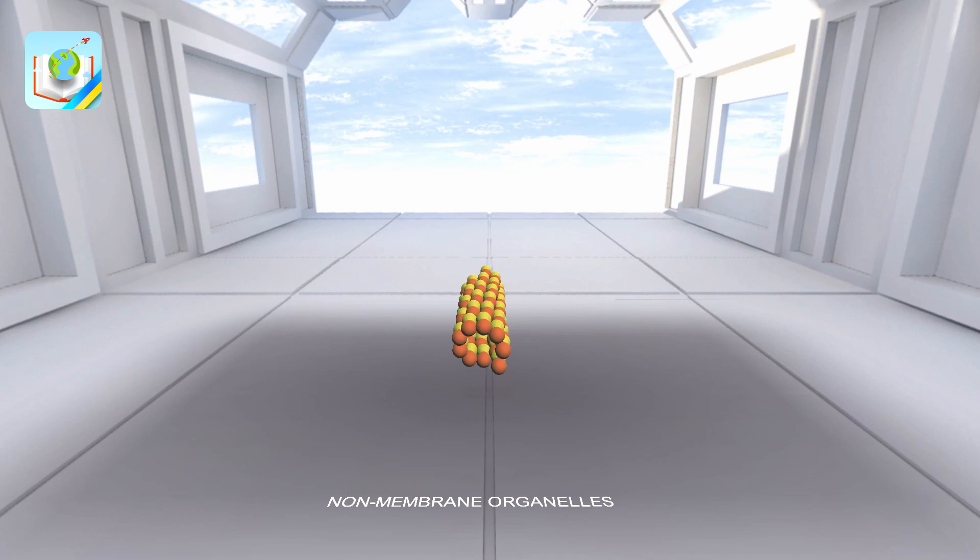Walls of microtubules are built with densely packed rounded subunits, formed from tubulin protein, about 5 nanometers in size.